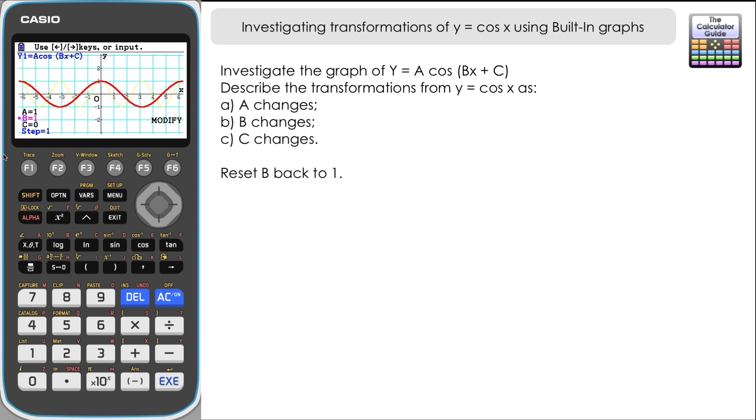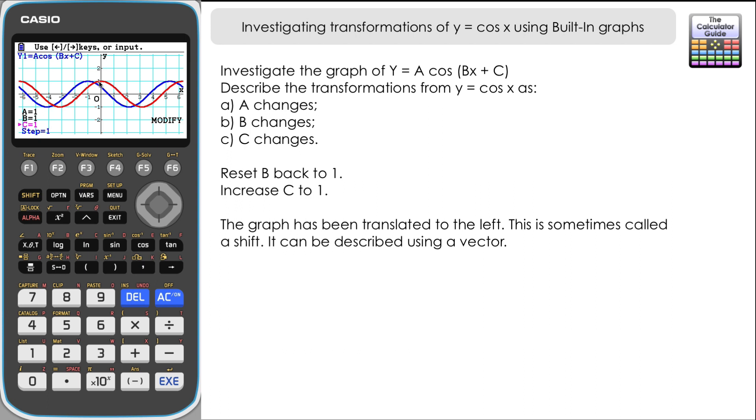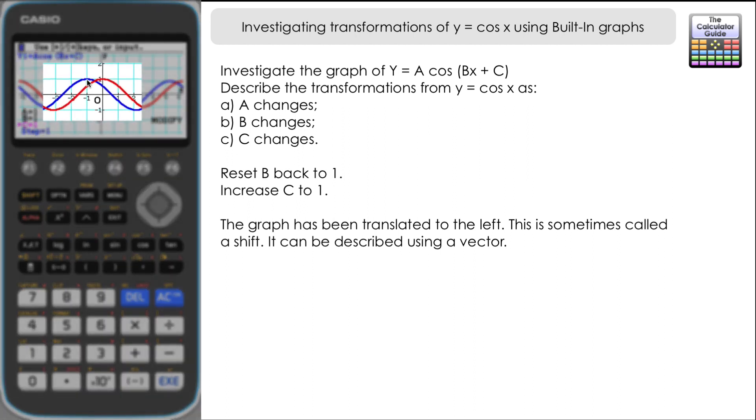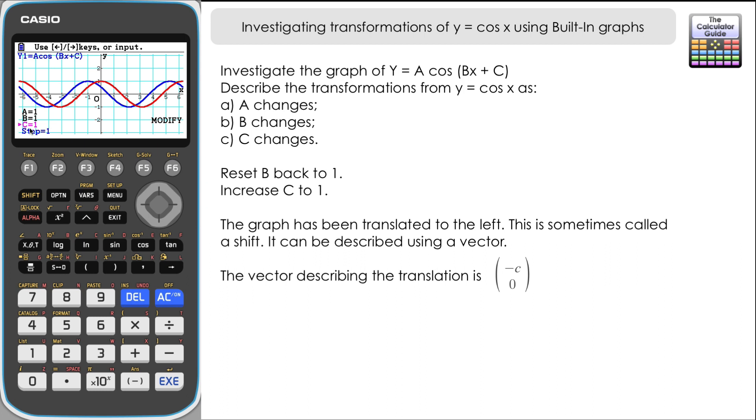Let's reset this back to y equals cosine x. That's an a of one, a b of one, and a c of zero. But we're going to alter c and then see what happens. So let's increase c to one. Now what's happened? Remember red is the original graph y equals cosine x. Well it appears that the graph has moved, so that is a translation. What is the vector? We'll look at the point zero one, which is actually the intercept point on the original graph. This is now translated to negative one one. We've been translated by vector negative c zero. So there's been no movement in the y direction but in the x direction it's been a translation by negative one.